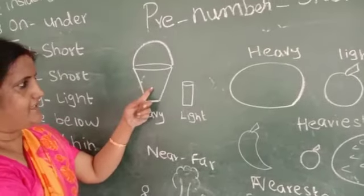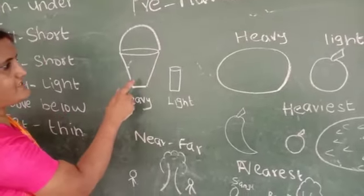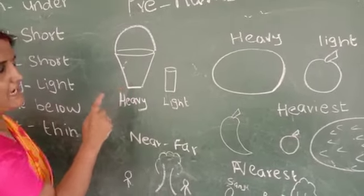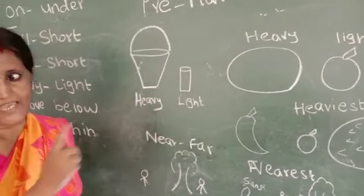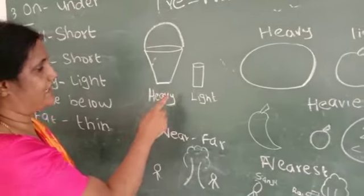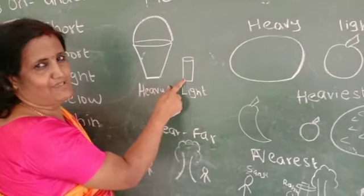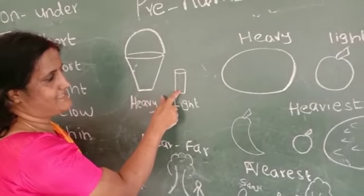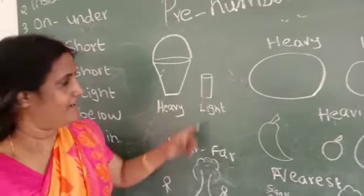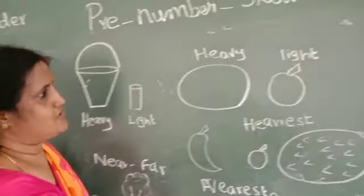Children, see here—this is a bucket and this is a glass. Can you say which is heavier? Which can you carry easily? The bucket, very good. Can you carry it? No, sorry ma'am. You can carry only this glass. So the bucket is heavy and the glass is light.